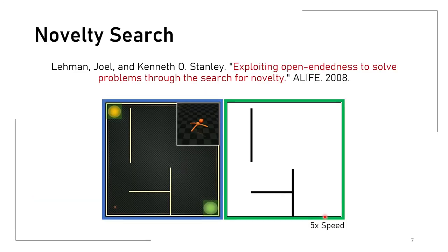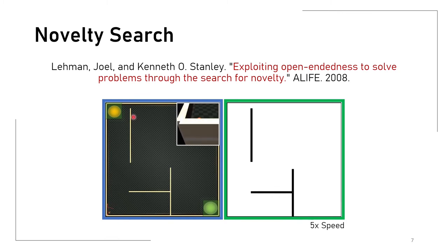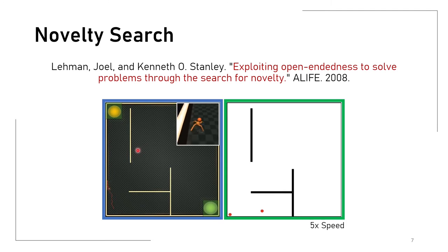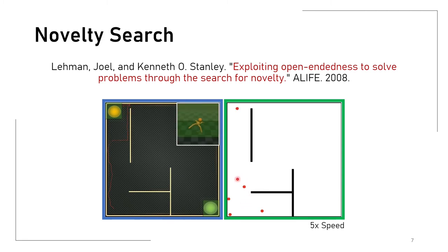This is exactly what Novelty Search does. It is a divergent search algorithm introduced by Joel Lehman and Kenneth Stanley in 2008. It generates a set of policies, evaluates them in an environment, and selects the most novel policies among all the others. For example, given a robot navigating a maze, the algorithm generates and evaluates policies, then generates a behavior descriptor for each — here, the final position reached. These are represented as points in a hand-designed behavior descriptor space.